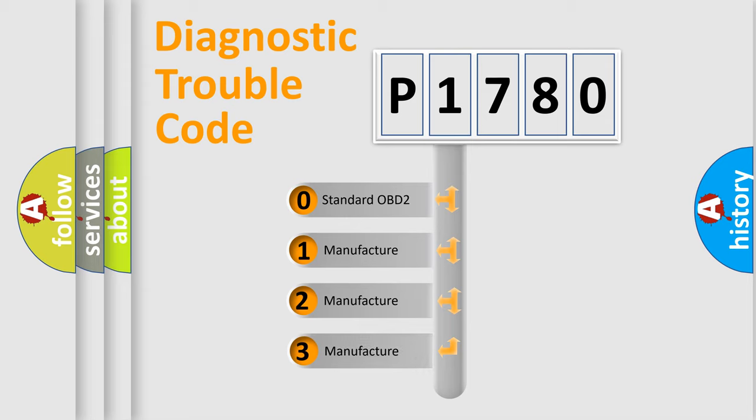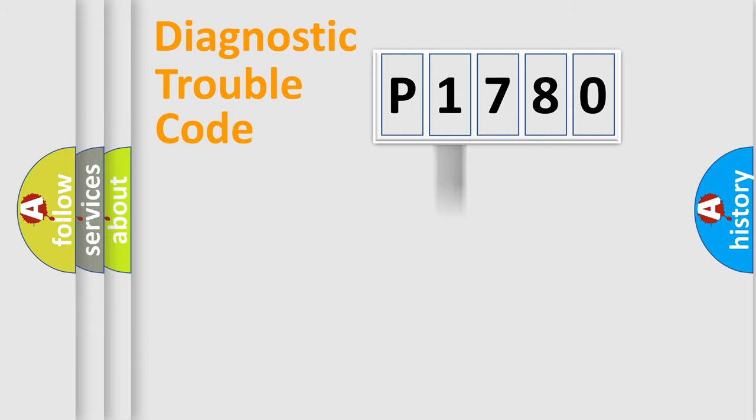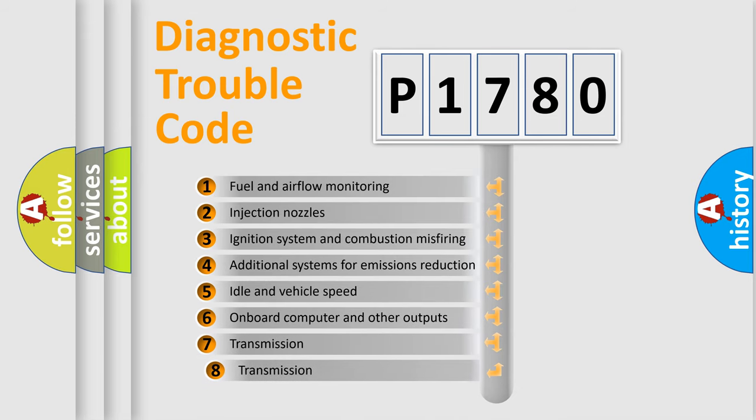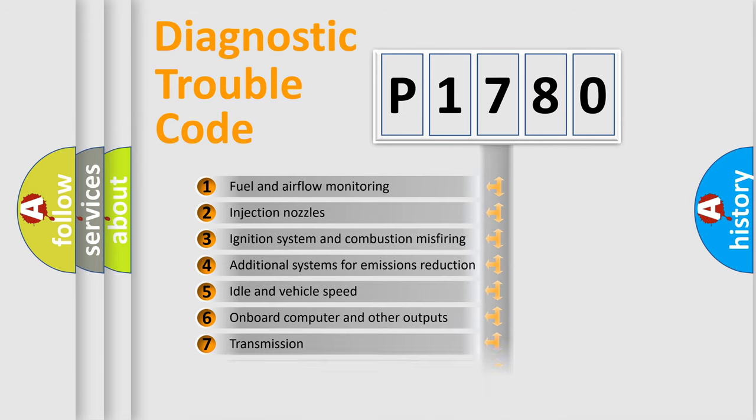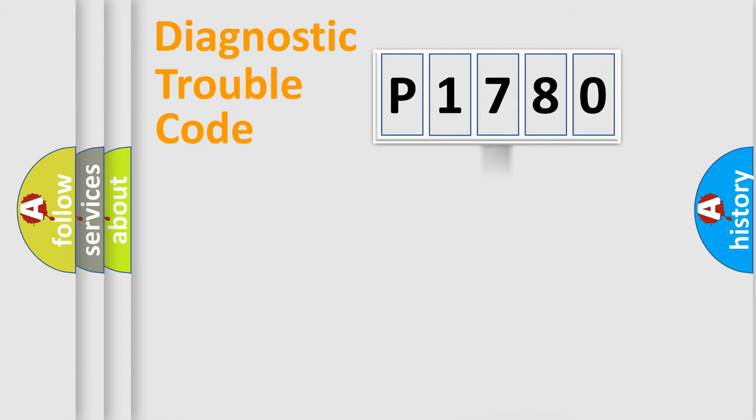If the second character is expressed as zero, it is a standardized error. In the case of numbers 1, 2, or 3, it is a more specific expression of the car-specific error. The third character specifies a subset of errors. The distribution shown is valid only for the standardized DTC code.